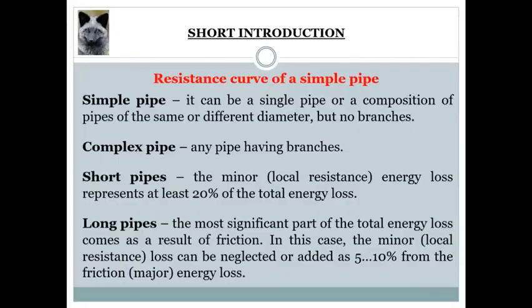To begin with, it's necessary to classify basically the different types of pipes. In general, they can be classified into two groups. Group 1 contains simple or complex pipes, while group 2 contains short or long pipes.